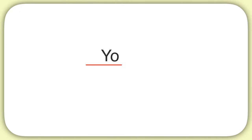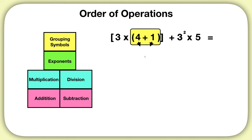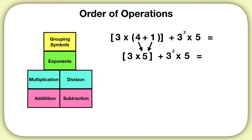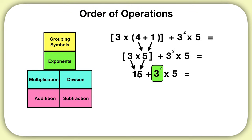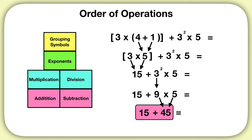Now it's time for you to practice on your own. What is the solution to this equation? Inside of your grouping symbols, you see parentheses. 4 plus 1 is 5. Then you finish solving your grouping symbols. 3 times 5 is 15. After that, you solve exponents. 3 to the power of 2 is 9. Then you solve multiplication. 9 times 5 is 45. And finally you can solve addition. 15 plus 45 is 60. That's our final answer.